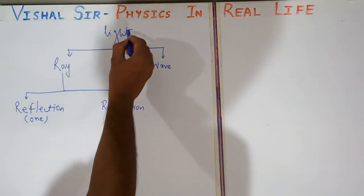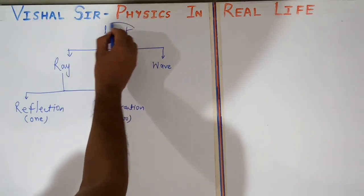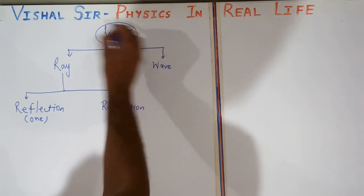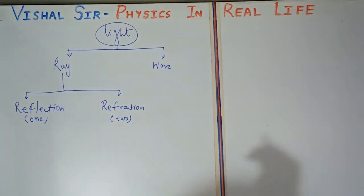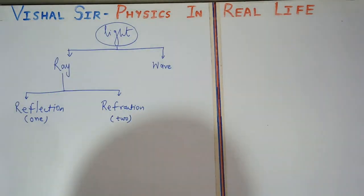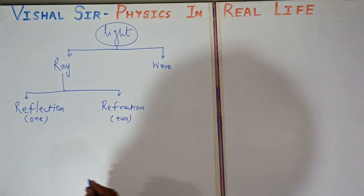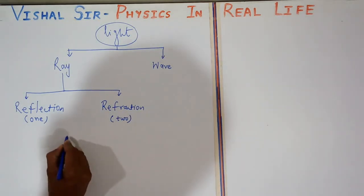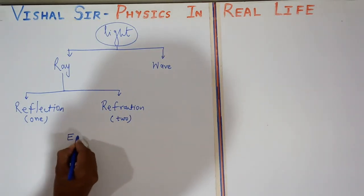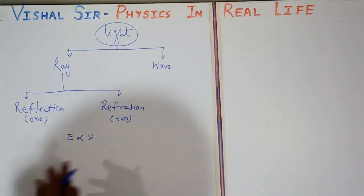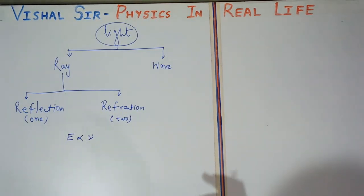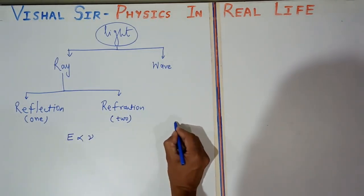So now we have to study: what is light? The scientist Planck told us that light is in the form of energy. E is directly proportional to nu, where nu is the frequency.